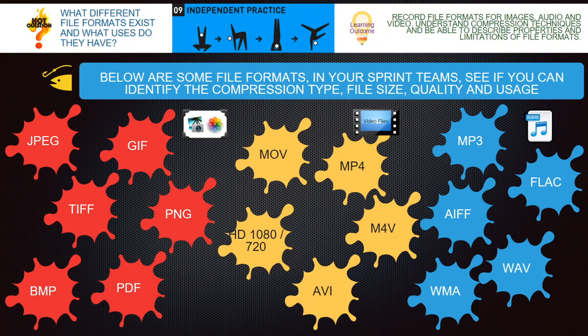Some of the common ones for images: JPEG, GIF, TIFF, PNG, PDF, and BMP. Remember, BMP stands for bitmap and it's uncompressed, so it's massive. Whereas JPEG, GIF, and PNG — PNG can be both actually — but JPEG and GIF are compressed file formats, so they're a lot smaller.